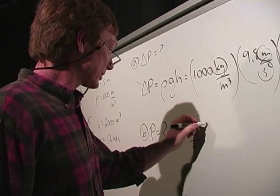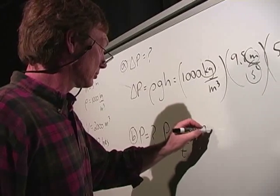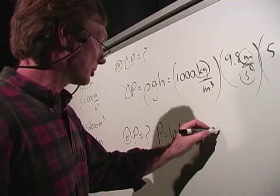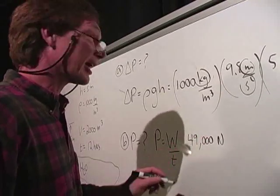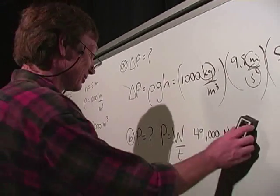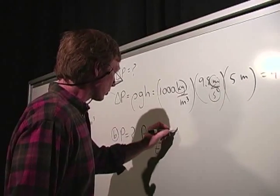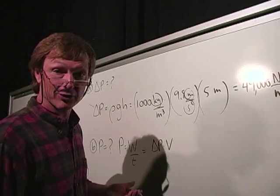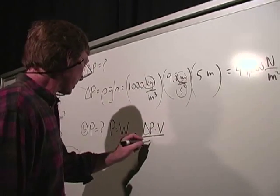Now, we've got 49,000 newtons per meter squared. Oh, wait a second. I haven't calculated the work. Forgive me. The work is the pressure difference times the volume. The units weren't working out, so I knew it had to be wrong. Divided by the time.